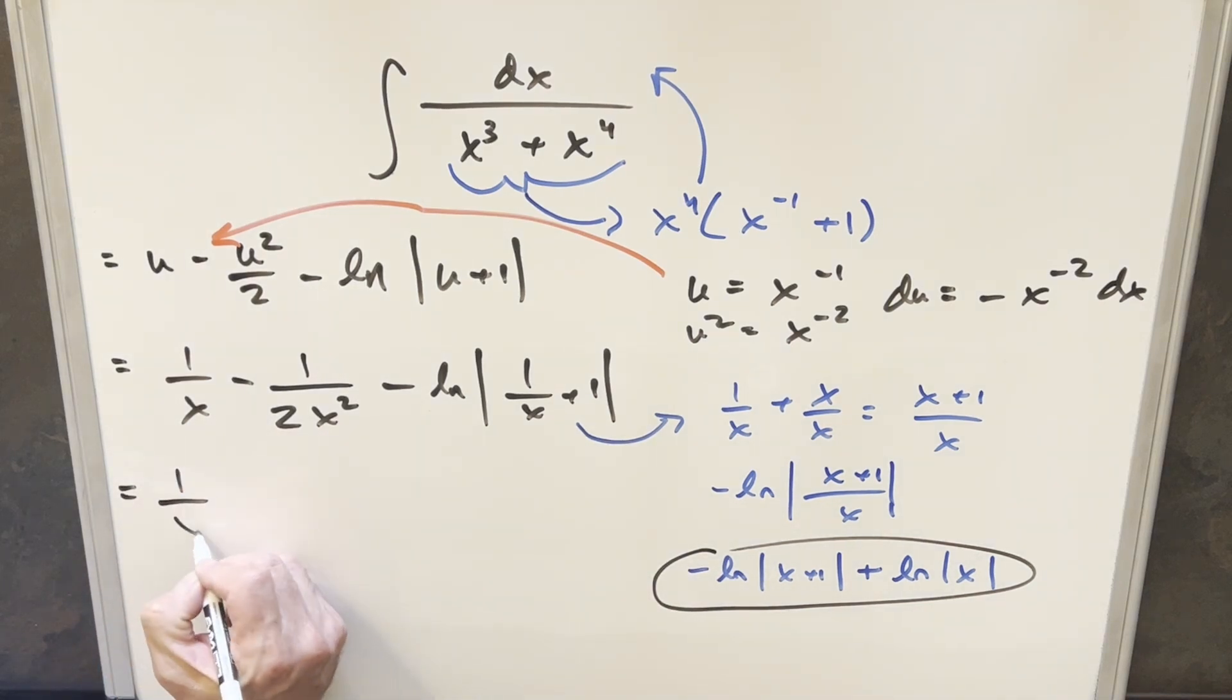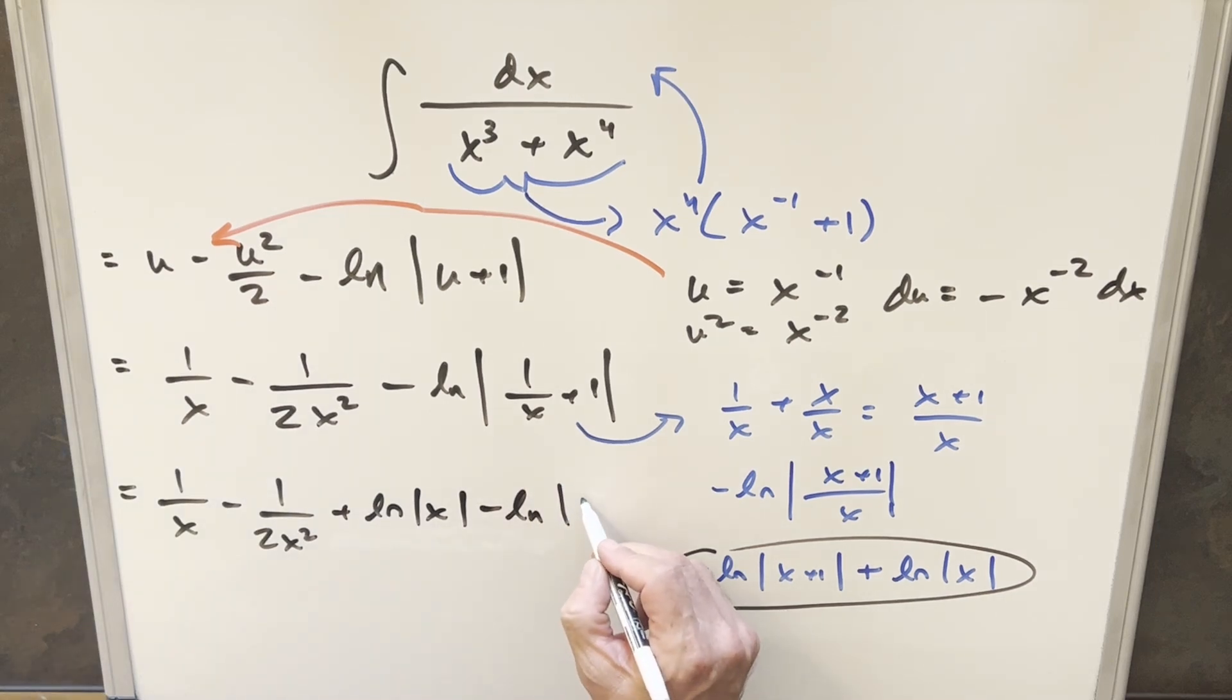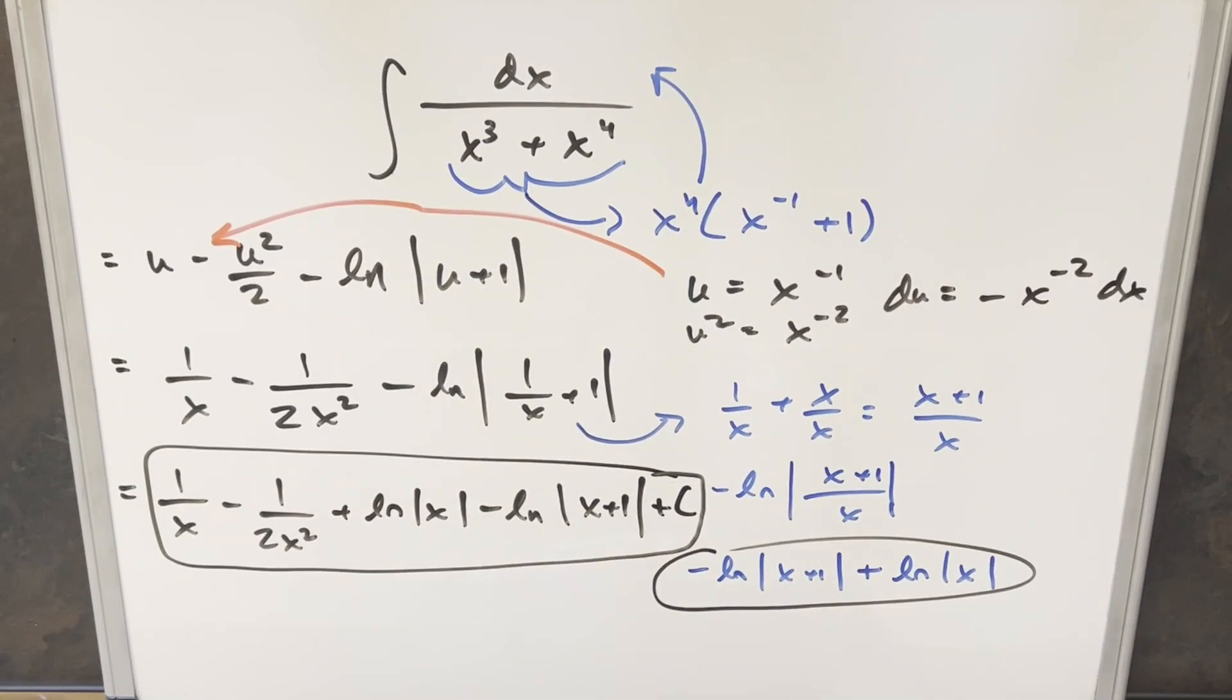We're just going to have 1 over x minus 1 over 2x squared plus, I'm going to change the order just because, plus natural log absolute value of x minus natural log absolute value of x plus 1. Add a plus c, and that's it. Okay, there you have it. Integral of 1 over x cubed plus x to the 4th. Thanks everyone for watching. Have a good day.